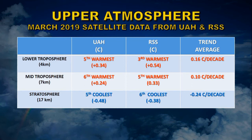The mid troposphere, at an altitude of approximately seven kilometers: UAH found it was the sixth warmest with a temperature differential of 0.24 degrees centigrade. RSS found it was the fifth warmest with a temperature differential of 0.33 degrees centigrade. The average trend over that period was 0.1 degrees centigrade per decade, indicating that layer of the atmosphere has warmed by 0.4 degrees centigrade in the last 40 years.